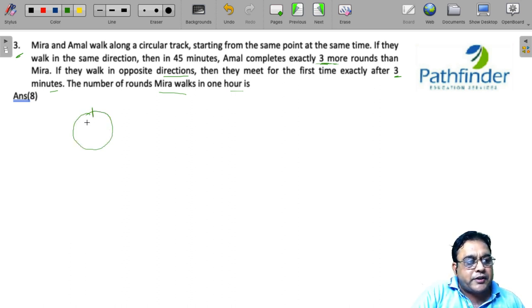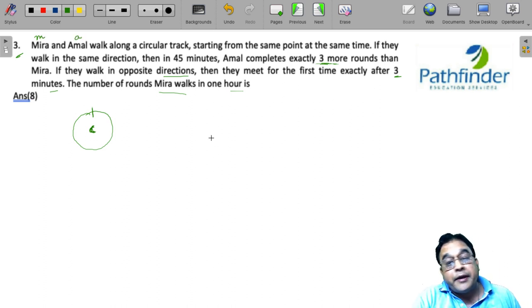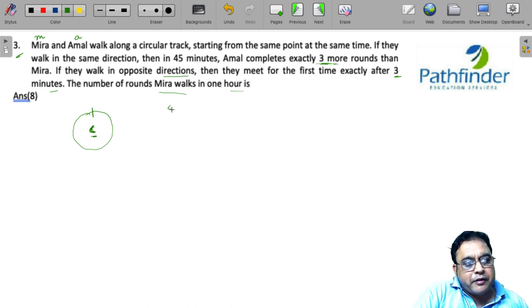So, let us say the circumference of this circular track is C. And let us say Meera walks M and Amal walks A meters per minute. So, now you have to understand, in 45 minutes, Meera will walk 45 times M meters.